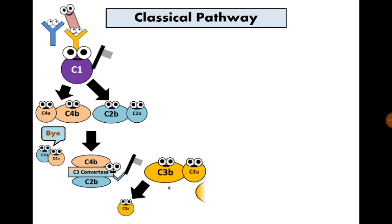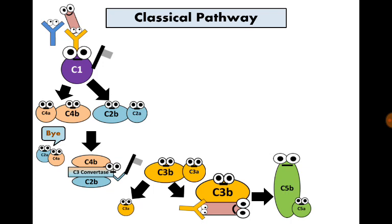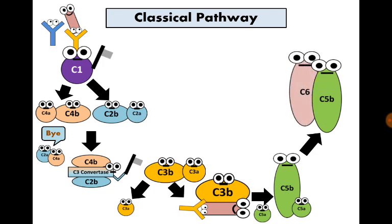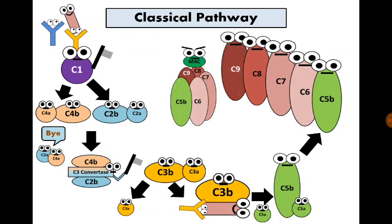C3 convertase will hydrolyze C3 into C3A and C3B. C3B will attach to the surface of the antigen-antibody complex that started the whole process, and this attachment will cleave C5 into C5A and C5B. C5B will attach to C6, then C7, C8, and C9, forming the membrane attack complex, or MAC.